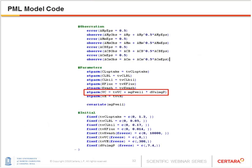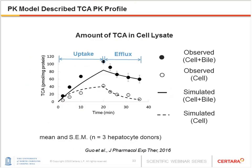We were estimating uptake clearance, basolateral efflux clearance, biliary clearance, and K-flux. Cellular volume and medium volume were fixed; cellular volume was estimated based on protein content in each well. The solid and dashed lines represent predictions using the mean of observations from the three hepatocyte donors.